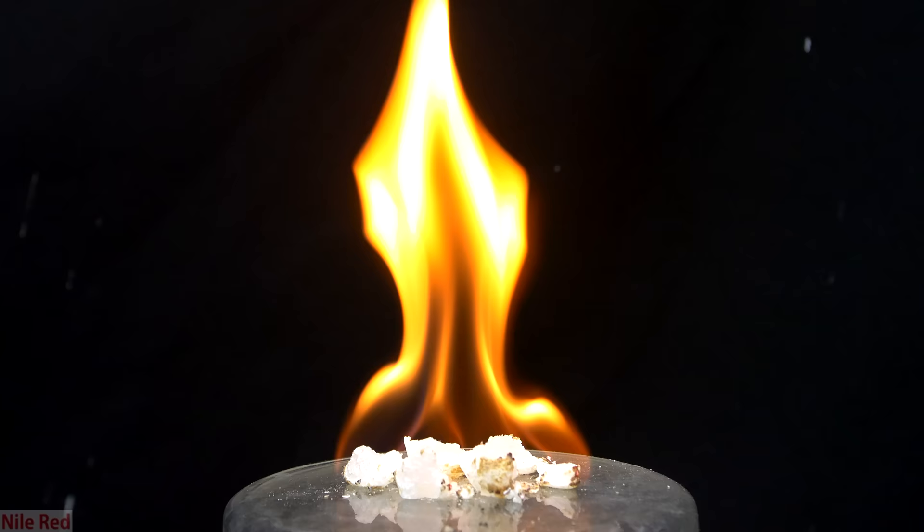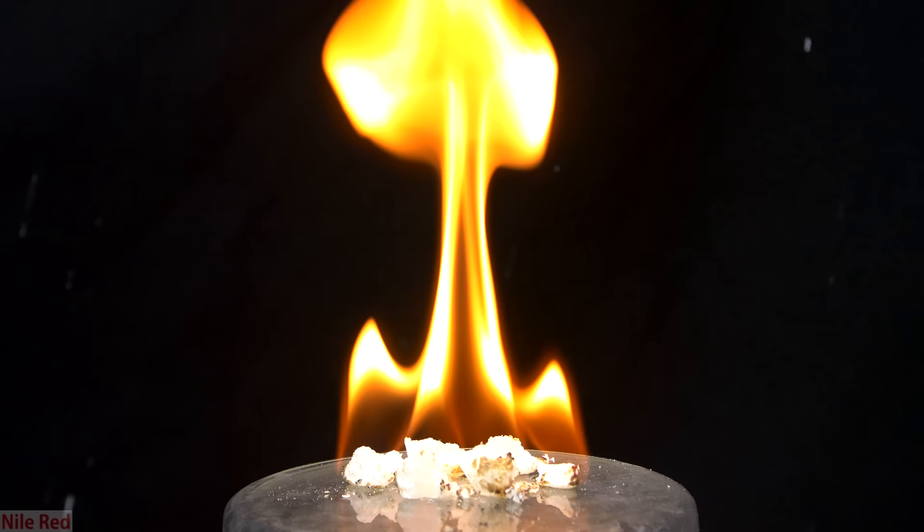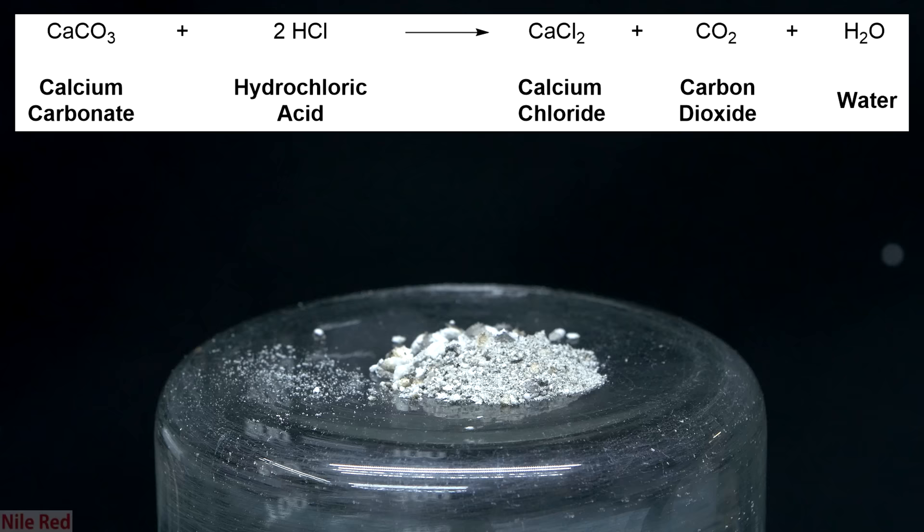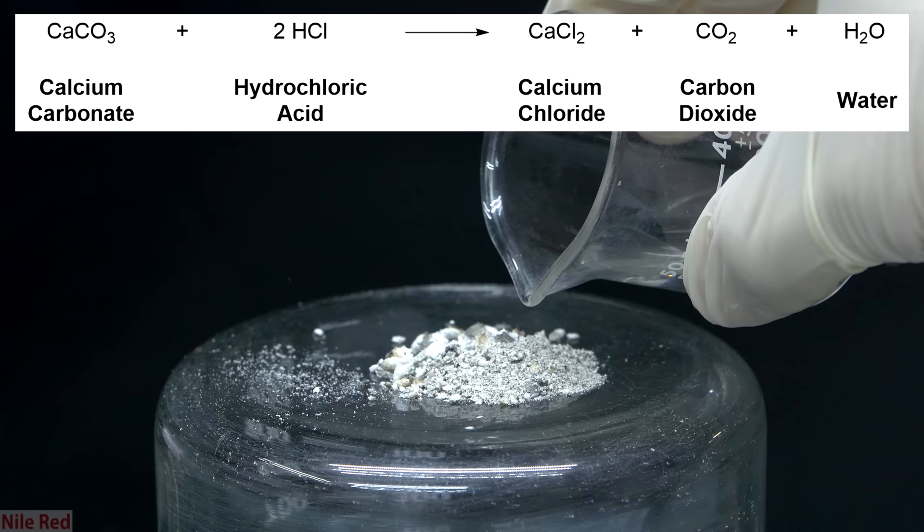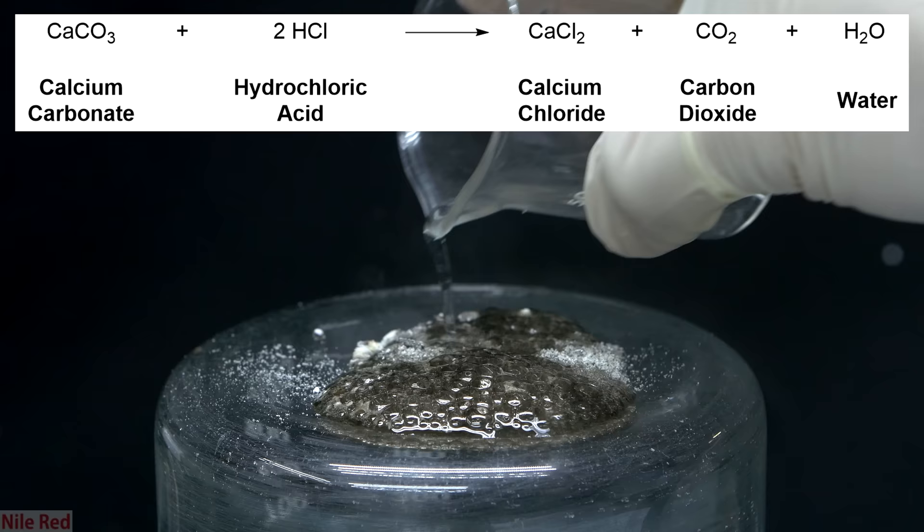The fire actually burns for quite a long time, but in the end we should be left with effectively just calcium carbonate. So once everything's all burned out, we can test for the presence of calcium carbonate by adding a little bit of hydrochloric acid. You can see that when the acid is added, a decent amount of bubbling occurs, and this shows that there was calcium carbonate present.